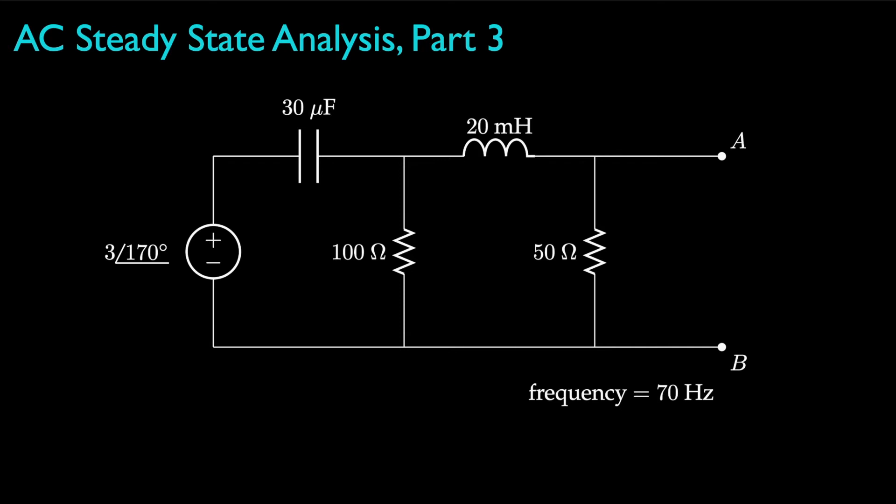To do that, let's look at a circuit with a voltage source of 3 volts at 170 degrees, two resistors, one of 100 ohms and one of 50 ohms, a 30 microfarad capacitor, and a 20 millihenry inductor. And let's use all of this to determine the voltage drop from node A to node B when the frequency is 70 hertz.